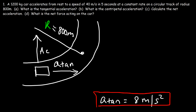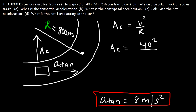Now for Part B — what is the centripetal acceleration? We'll calculate it at the final speed of 40 m/s, since at the initial speed of zero there would be no centripetal acceleration. The centripetal acceleration is V squared over R: 40 squared is 1600, divided by 800, giving a centripetal acceleration of 2 meters per second squared.